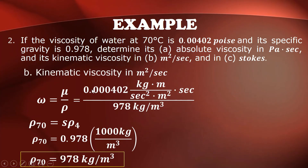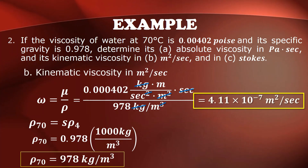Using the kinematic viscosity formula, the absolute viscosity is 0.000402 pascal-seconds (since newton equals kg·m/s², pascal-second is the unit). Dividing by 978 kg/m³ and cancelling units — kilograms, meter squared, and one unit of second — gives 4.11 times 10 to the negative 7 meters squared per second.